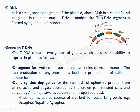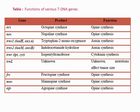T-DNA is a small segment of 24 kb that integrates at random sites in the plant genome. It is flanked by left and right border sequences. There are two types of genes on the T-DNA: first, oncogenic genes for the synthesis of phytohormones, which lead to tumor formation; and second, opine synthesis genes responsible for synthesis of opines like octopine, nopaline, and agropine. Opines are products from amino acids and sugars secreted by crown gall-infected cells and serve as carbon and nitrogen sources for Agrobacterium growth.